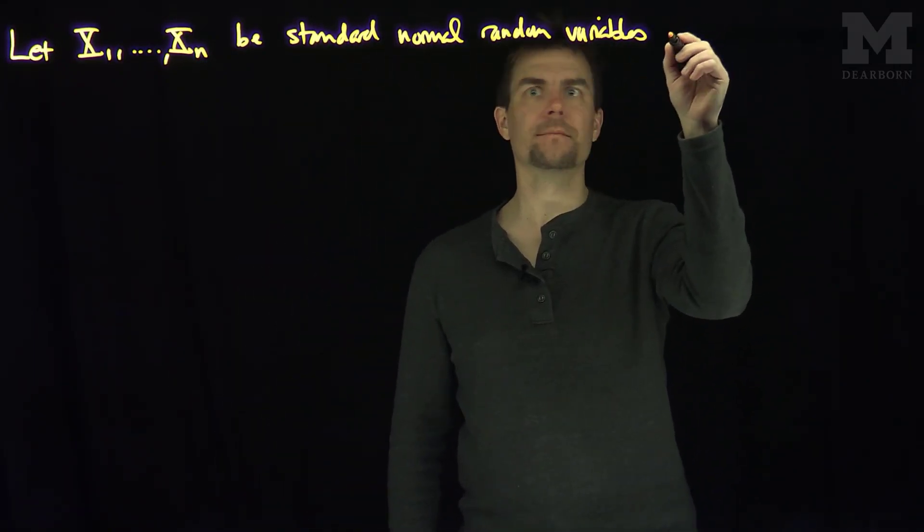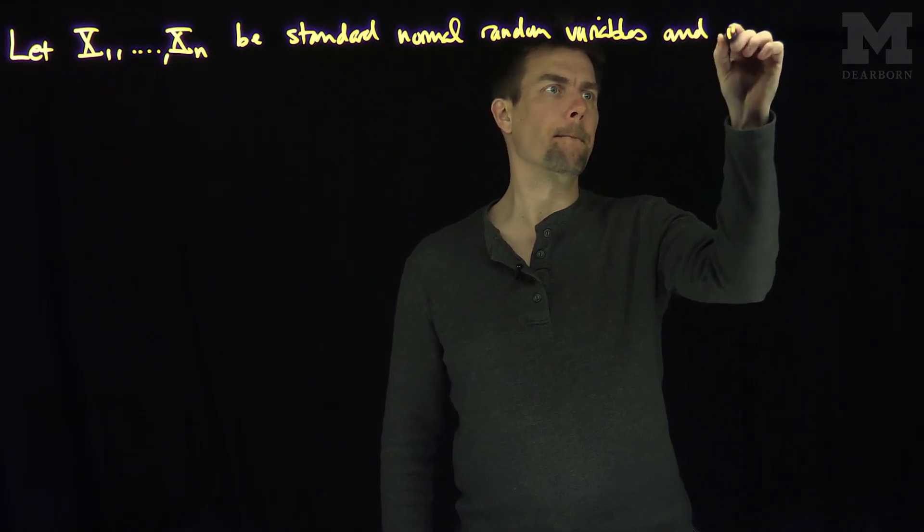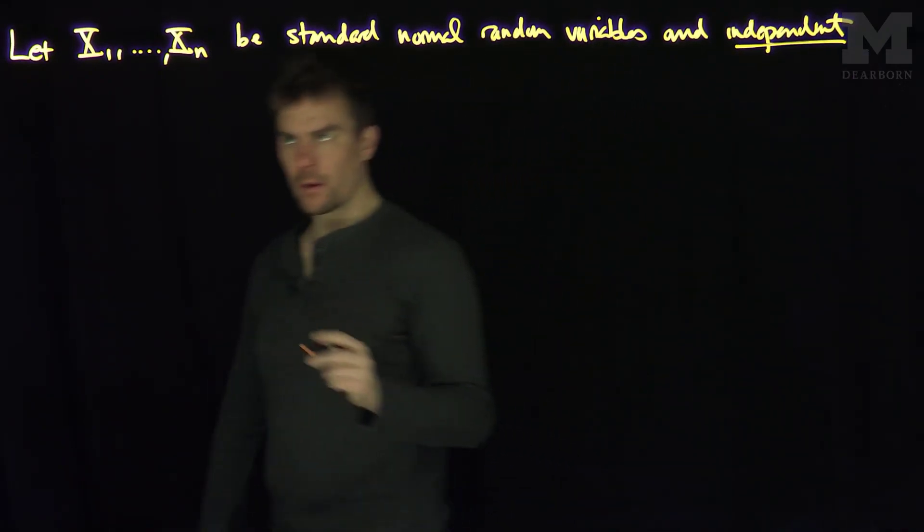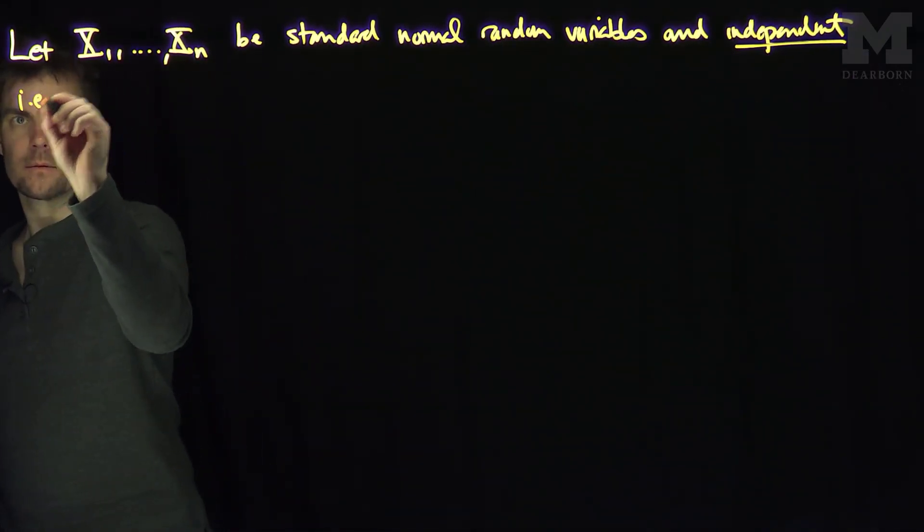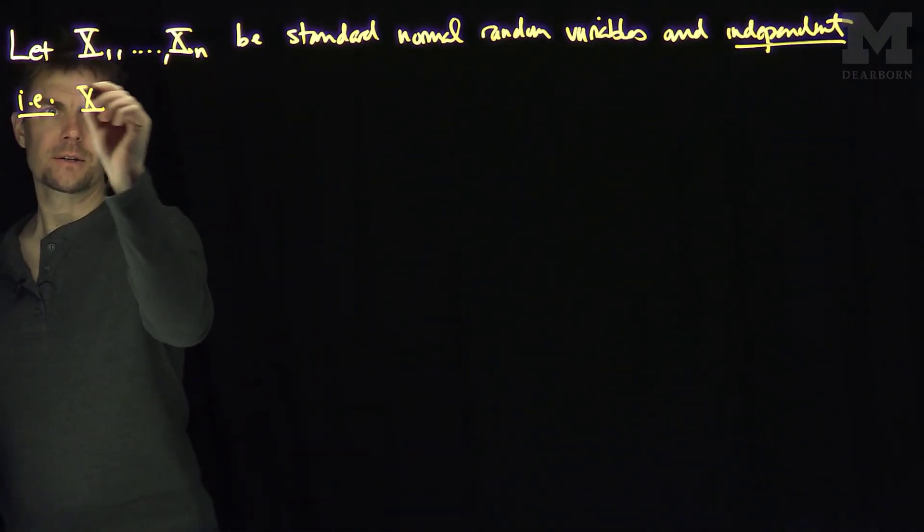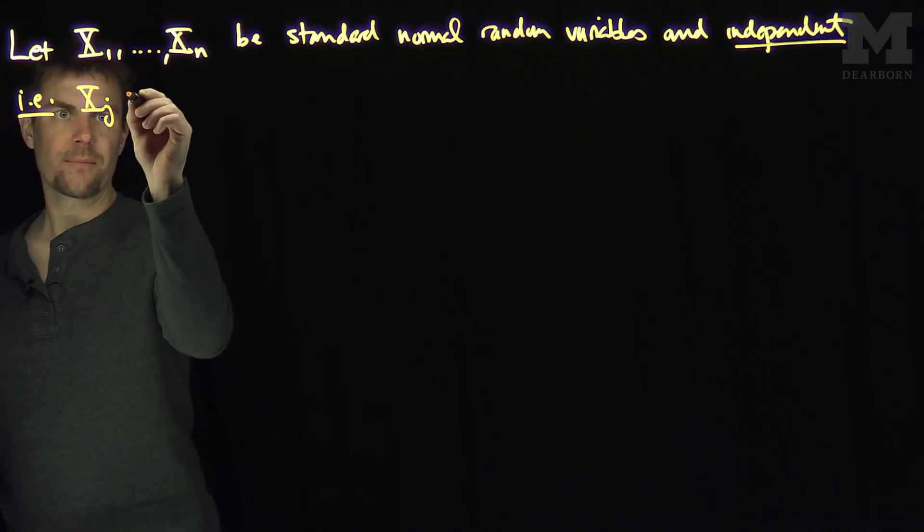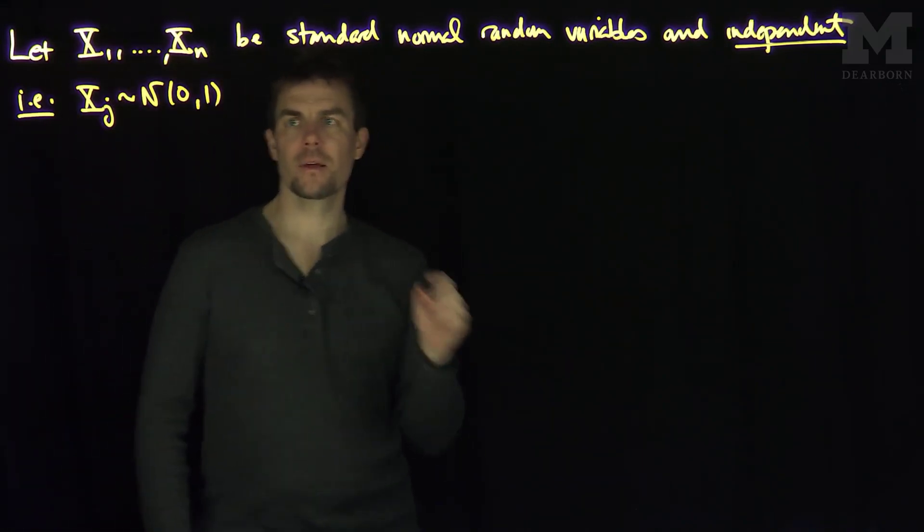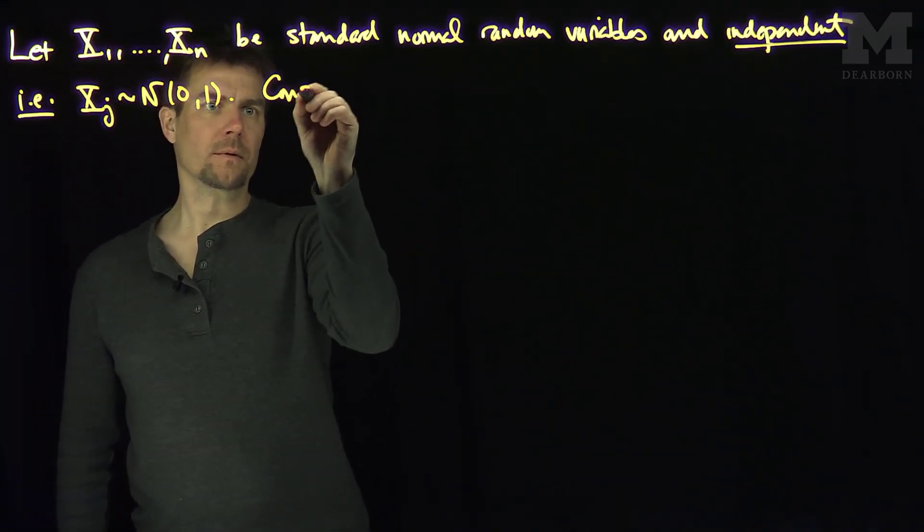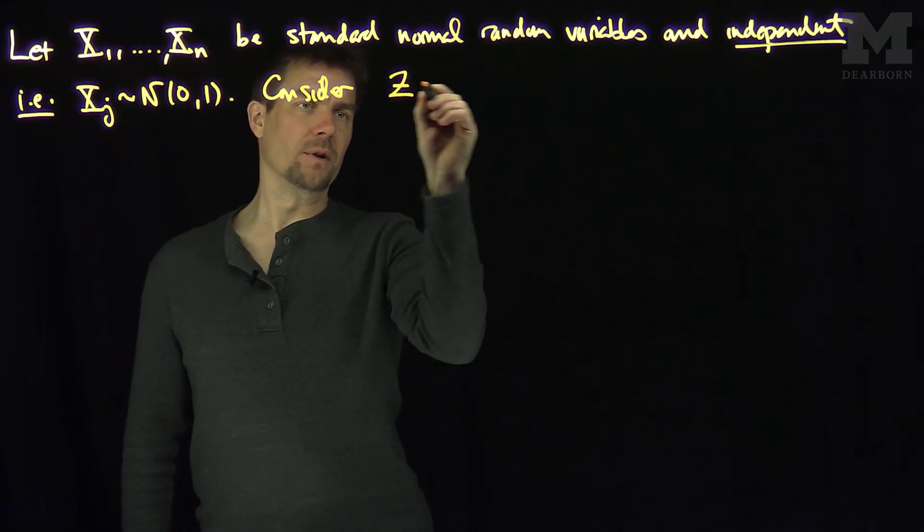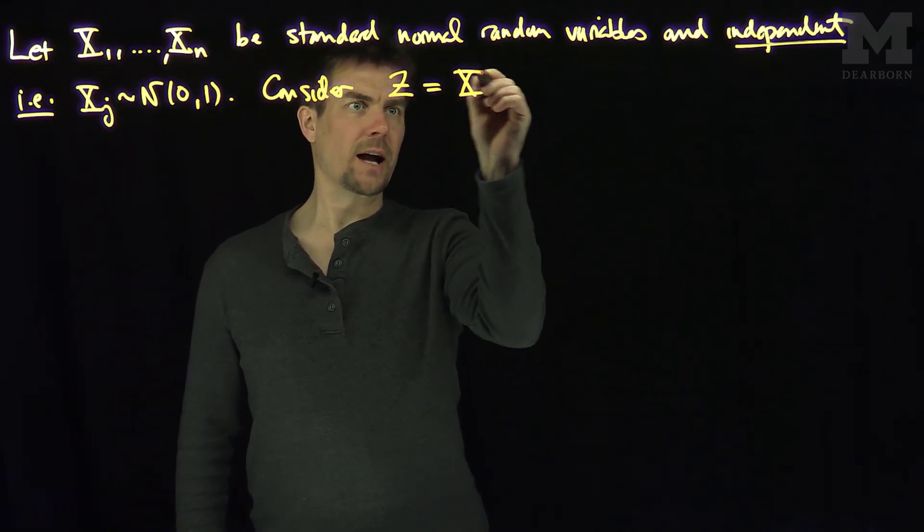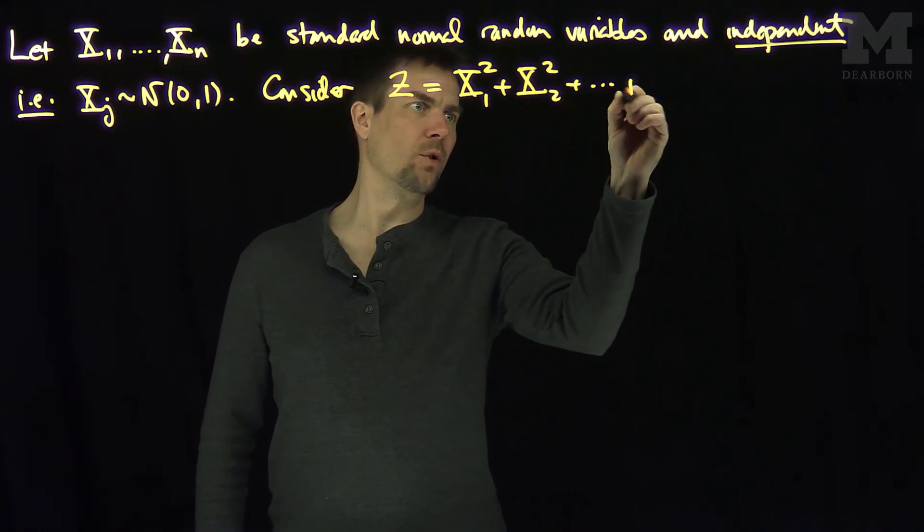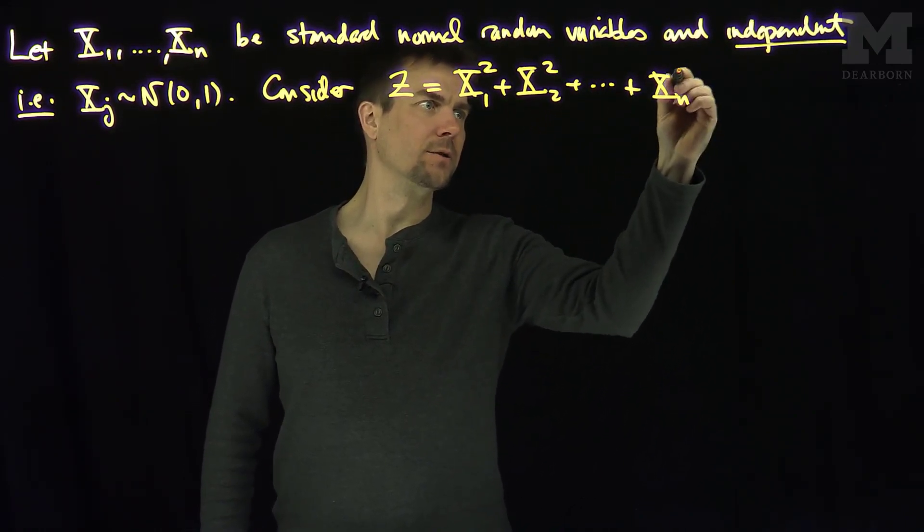and independent, that's important, i.e., any one of these, xj, is normally distributed with mean 0 and variance 1. Then consider a random variable z, which is x1-squared plus x2-squared plus all the way down to xn-squared.